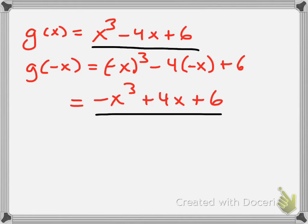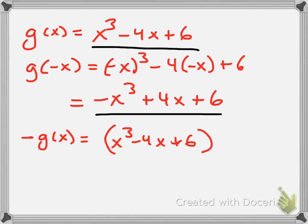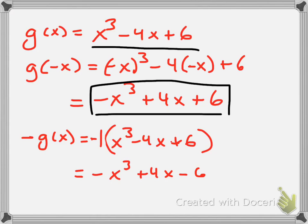Let's check if it's odd. I'll find the opposite of g of x by taking the original — x to the third minus 4x plus 6 — and multiplying by negative 1. Distributing gives: negative x to the third, positive 4x, and negative 6. Comparing: my evaluated result has a positive last term of 6, but the negation has negative 6. Since the result doesn't equal the original and doesn't equal the negation of the original, this function is neither even nor odd.